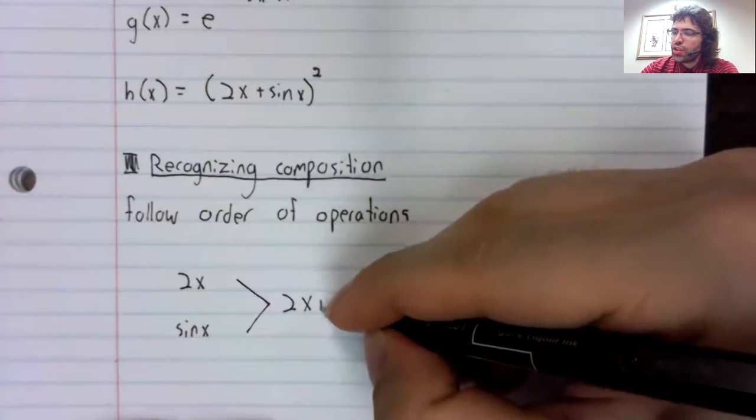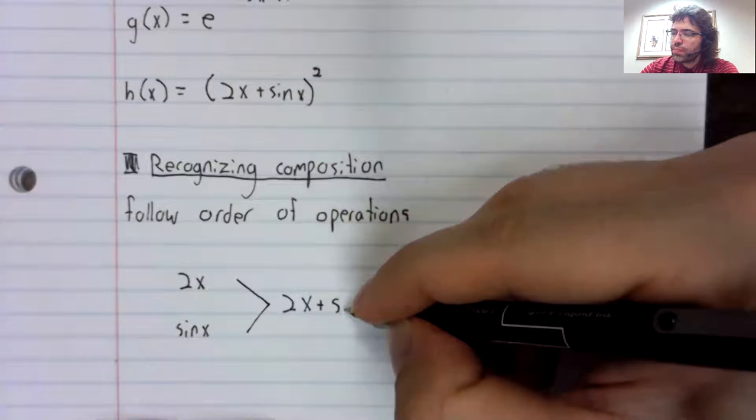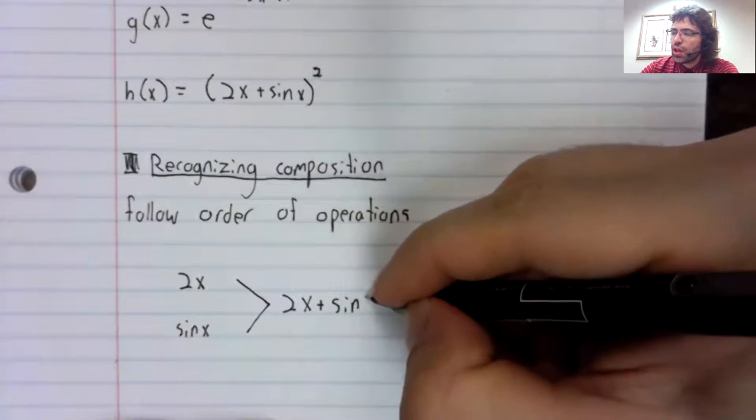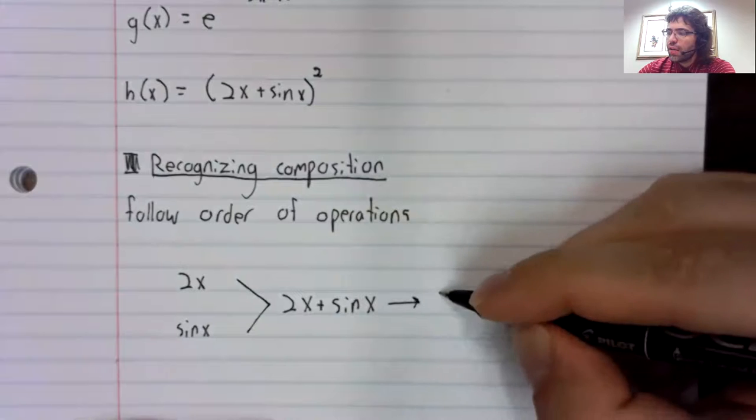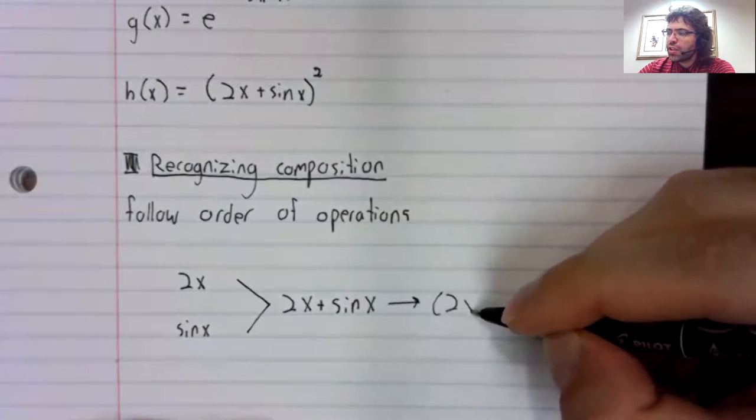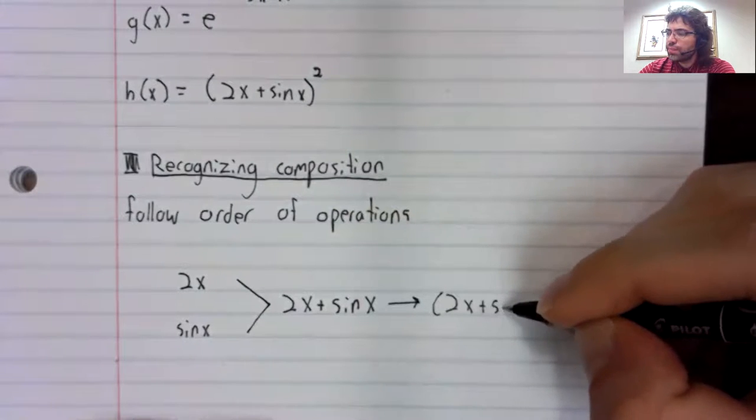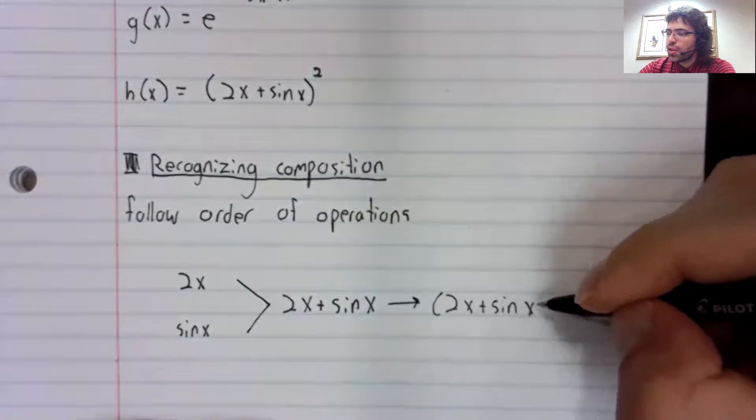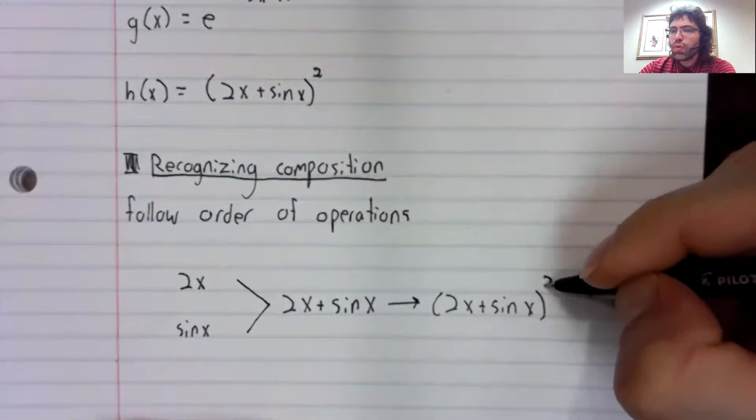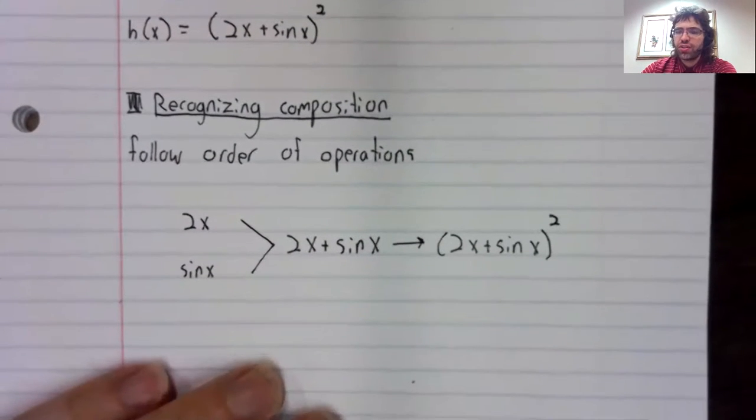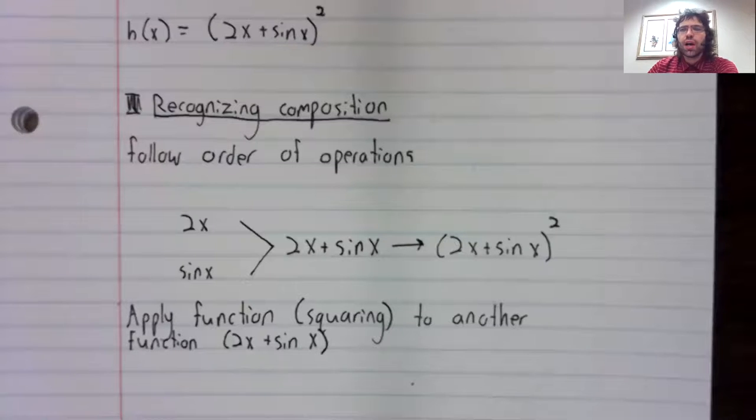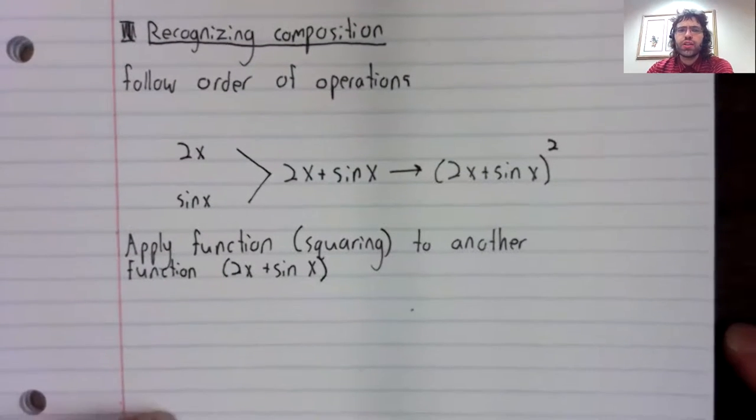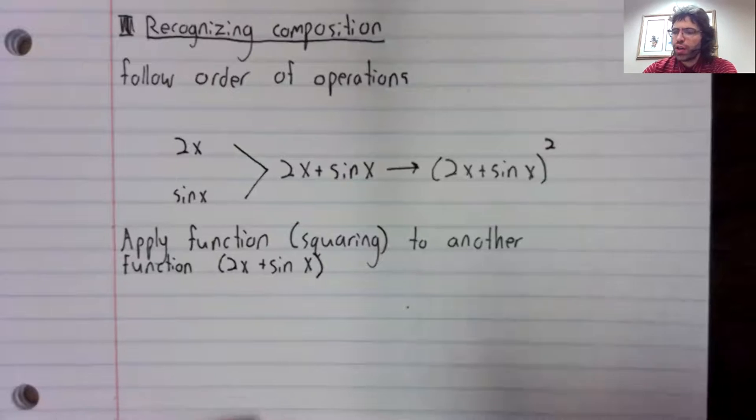Addition comes next. And finally, you square it. So the last thing we do is apply a function to another function.